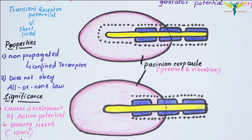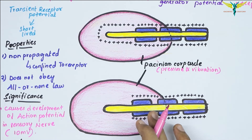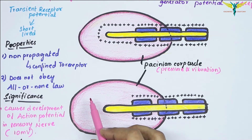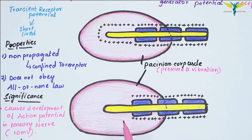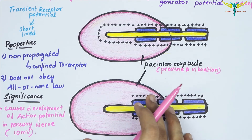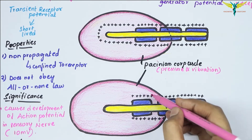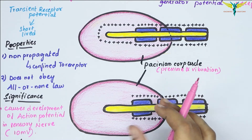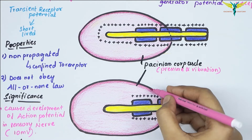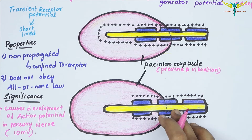Pacinian corpuscles are situated in the deeper layers of the skin. Some corpuscles are also situated in tissues surrounding the joints, such as the fascia over the muscle, the tendons, and the joint capsule. Pacinian corpuscles in these tissues are responsible for determining the position of the joints. They are small, onion-shaped structures.